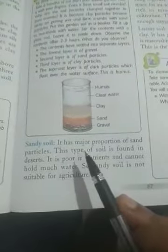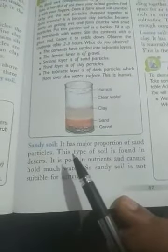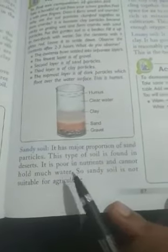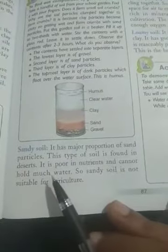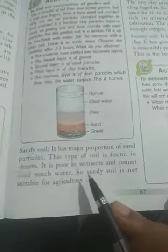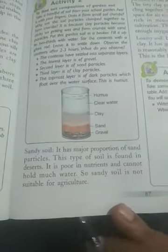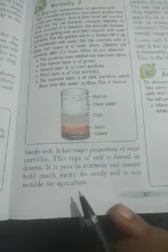Now we will study about different types of soil. On the earth's surface, various types of soil are present. The first is called sandy soil. It has a major proportion of sand particles. This type of soil is found in deserts. It is poor in nutrients and cannot hold much water, so sandy soil is not suitable for agriculture.